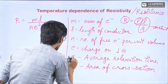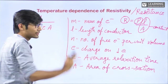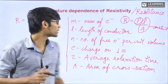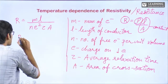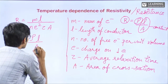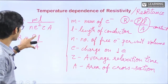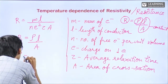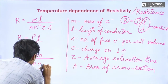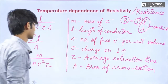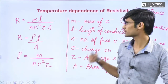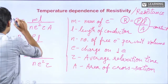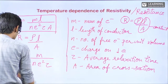I hope you know this formula and what each quantity denotes. Now, if I want to write ρ — we know resistance is equal to ρL/A — comparing these two and removing L/A, ρ will be M/(NE²τ). Just note it down. This is a revision of the last session where I gave the formula for resistance and resistivity.